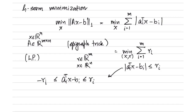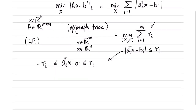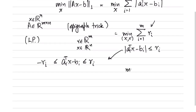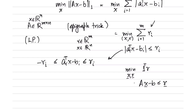We have linear constraints and a linear objective function, which makes this a linear programming problem. Sometimes this problem is compactly written as minimization over x and r of 1 transpose r, subject to Ax minus b less than or equal to r and greater than or equal to minus r. This is the compact representation, and these two problems are exactly the same. This notation means entry-wise less than or equal to.